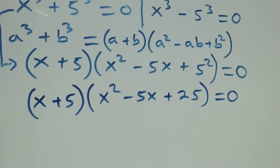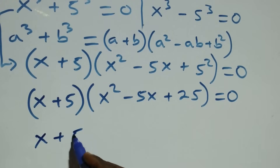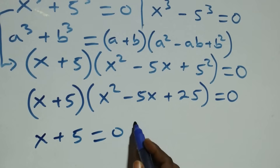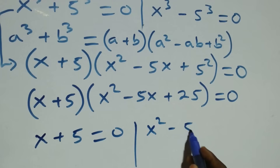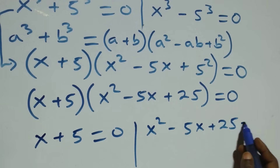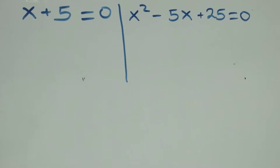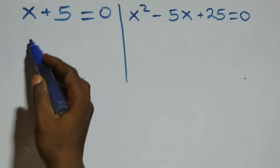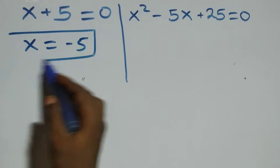At this point we have two possible cases as well. x plus 5 equals to 0, or we have x squared minus 5x plus 25 equals to 0. Solving the first case, we have x equals to minus 5, which is a real solution.